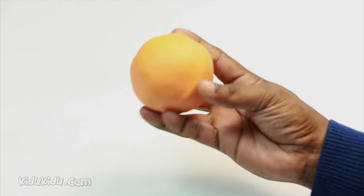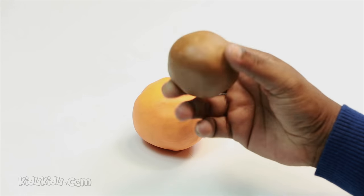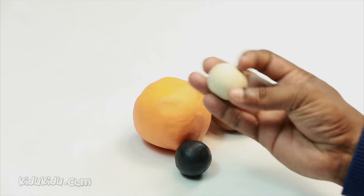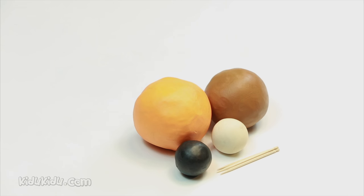Gather some balls of play-doh. The yellowish mustard colored balls are perfect for a giraffe, and then let's get some brown, black and white play-doh as well. It looks like he has set aside three toothpicks to use at some point.